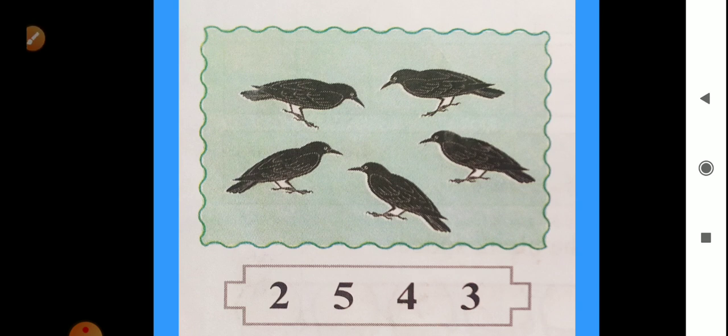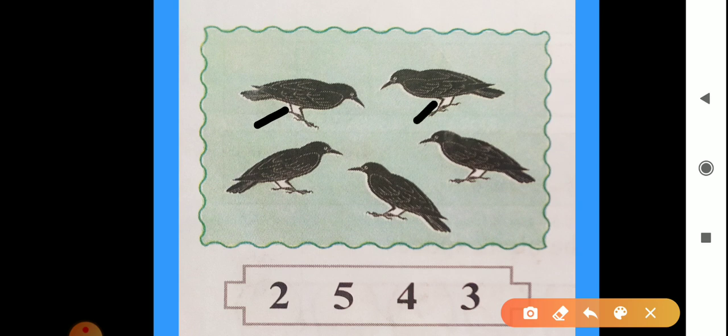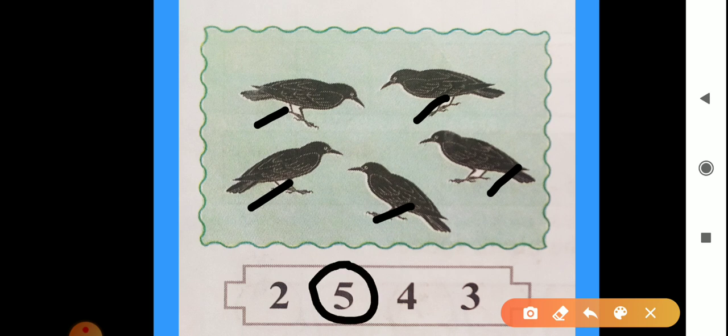Which picture is? This is the picture of crows. Okay. So first count that. How many crows are here? This is 1, 2, 3, 4 and 5. There are 5 crows. So we will circle the number 5. Okay.